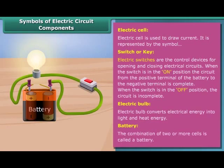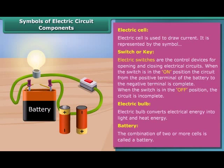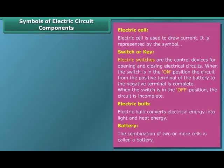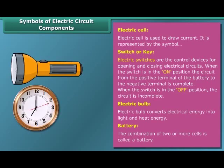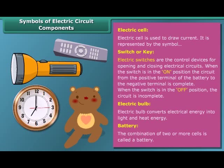The combination of two or more cells is called a battery. In a battery, the positive terminal of one cell is connected to the negative terminal of the next cell. Many devices such as torches, wall clocks and watches, toys, and TV remote controls are battery-operated devices.